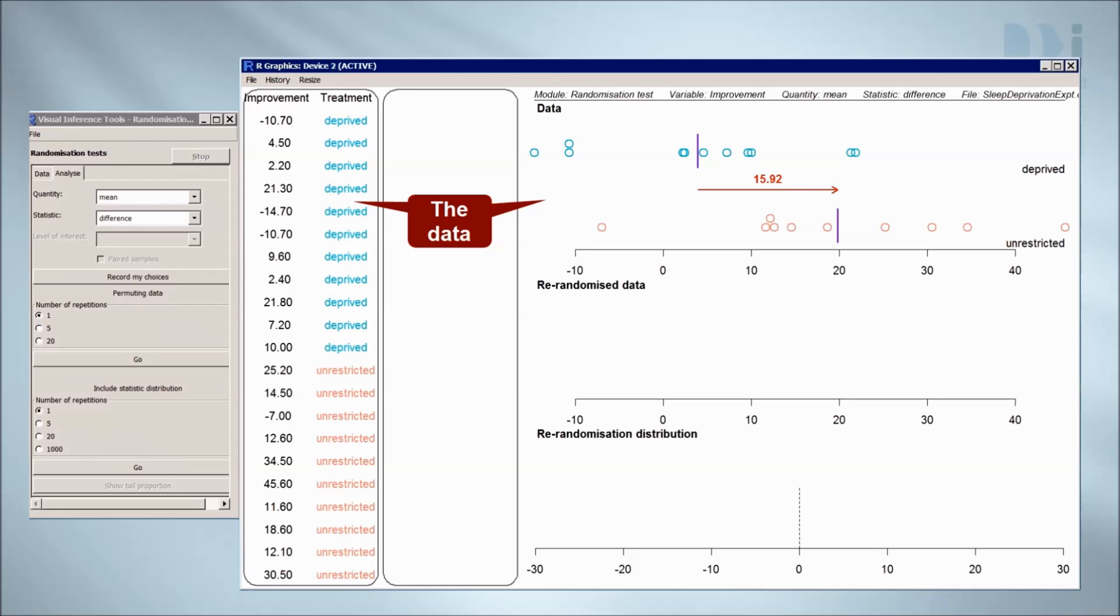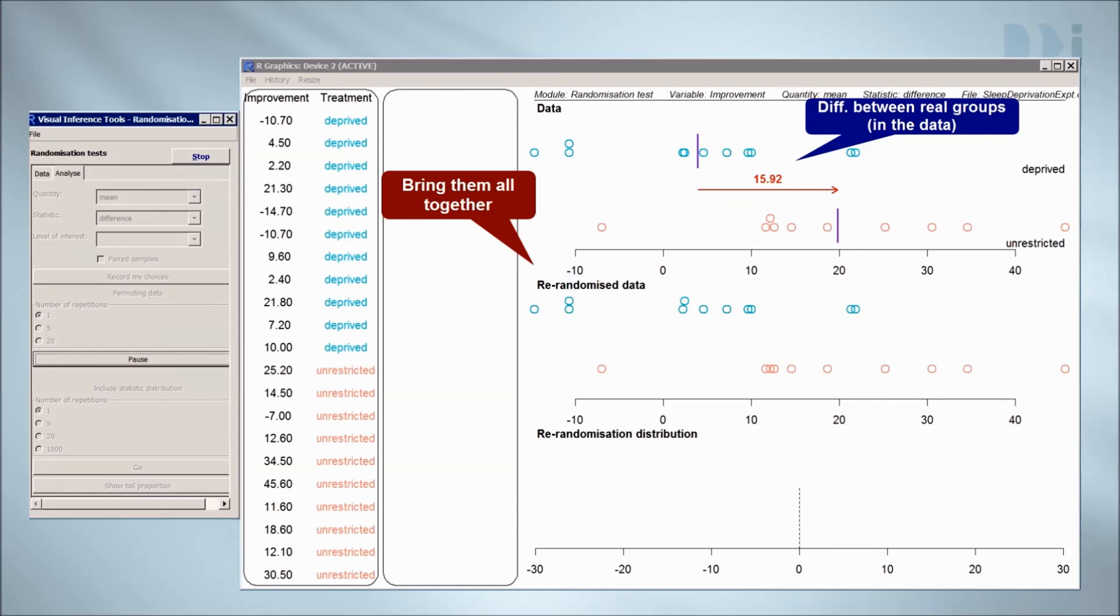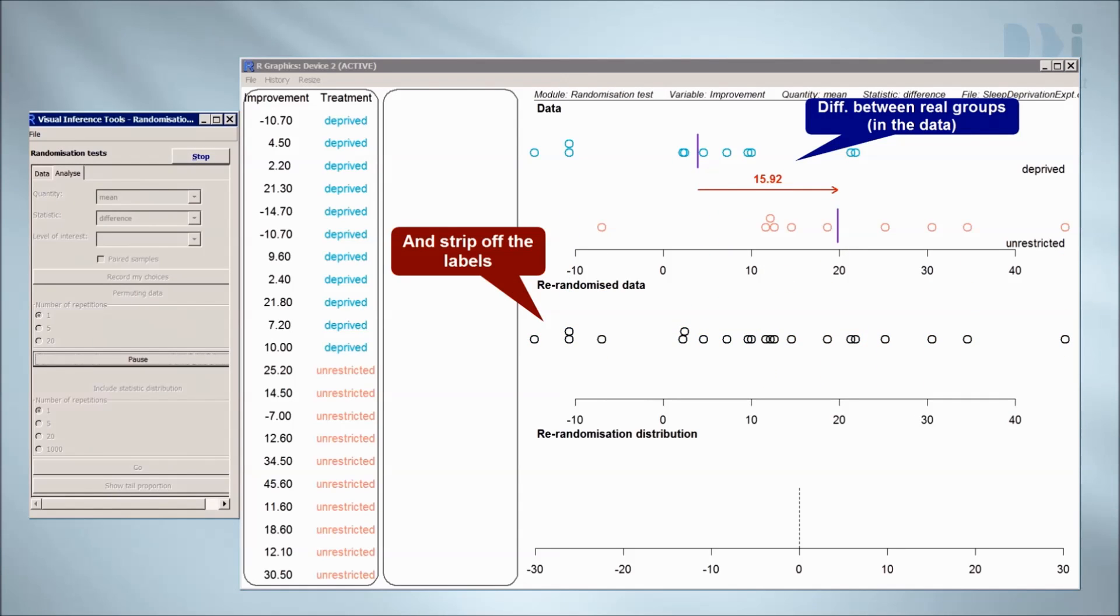We begin with the real data from the experiment, which involves real treatment groups. We think, maybe sleep deprivation makes no difference, and the difference in means we see is just due to randomization. Well, if sleep deprivation made no difference, then it wouldn't matter what treatment people got, the results would have been the same. So we'll strip the treatment labels and colors off everyone.